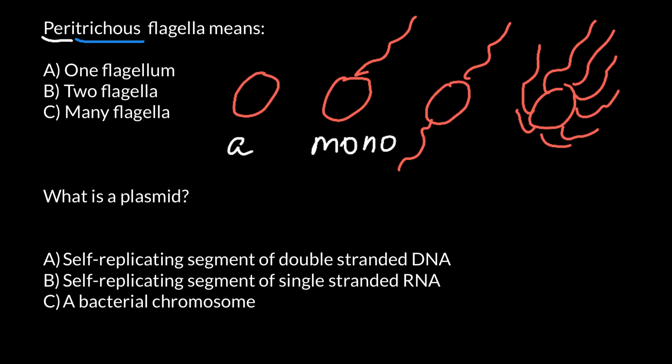The third type will probably need a mnemonic technique. The name is Amphitrichus. 'Amphi' reminds me of amphetamines, which are drugs used to alter mood and also used as stimulants. Remember, this is a mnemonic technique — not a scientific method, just a way to memorize. This type of bacteria has two flagella and would therefore be more motile.